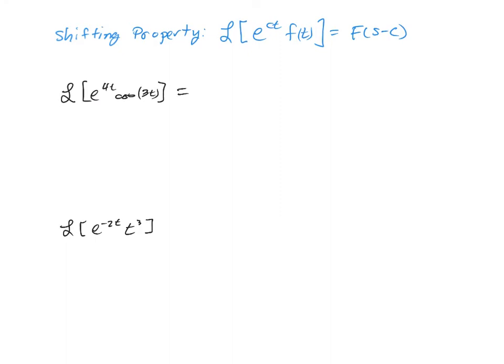So some people like to write this as a Laplace transform of cosine of 3t, which is going to be s over s squared plus 9. And then they write that we replace the s with an s minus 4.